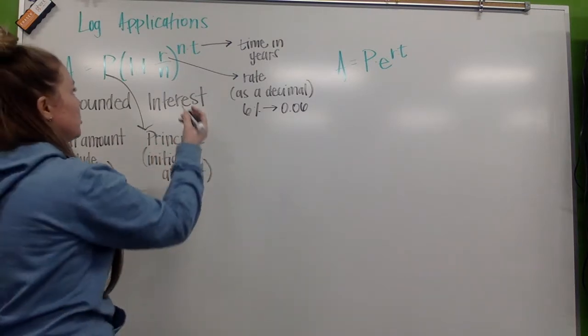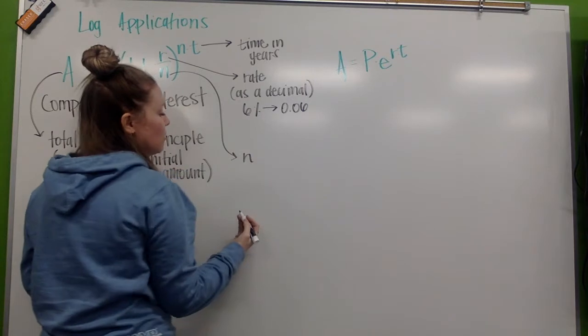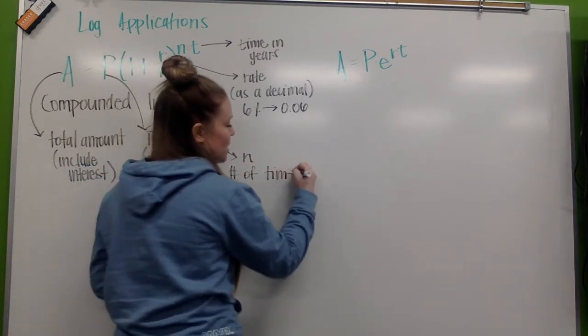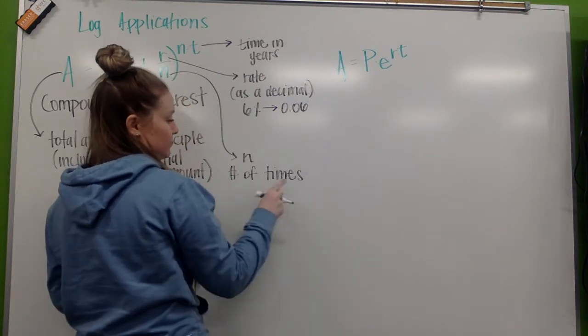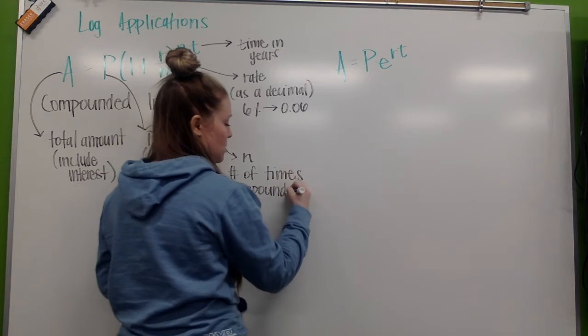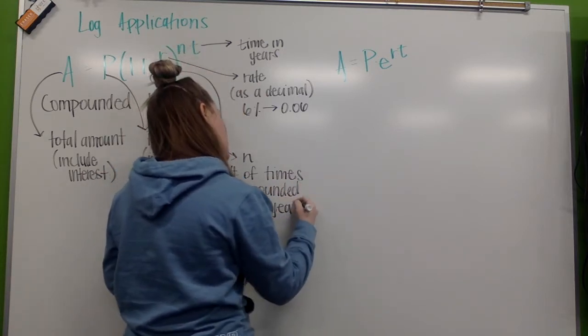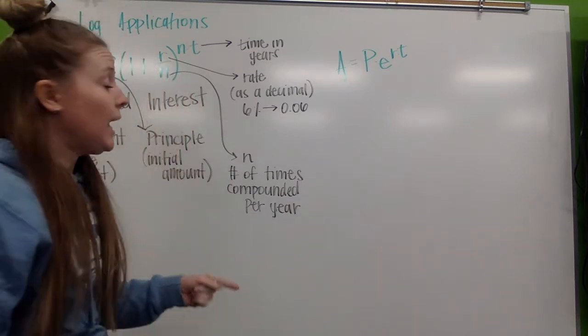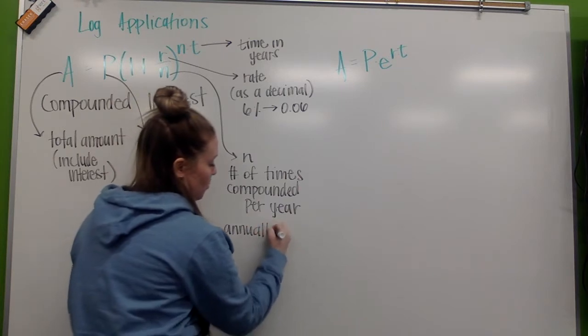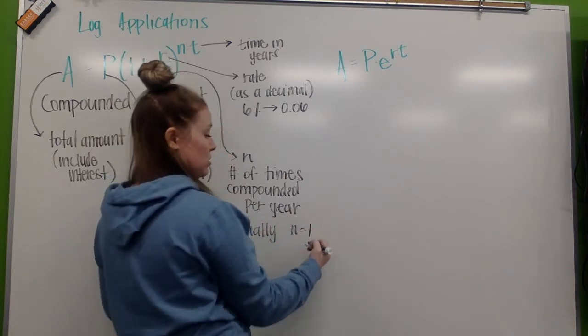And our last variable here is N. N represents the number of times your interest is compounded per year. So, we're just going to say the number of times compounded per year. So, for example, if they told us that it was compounded annually. Well, annually is once a year.